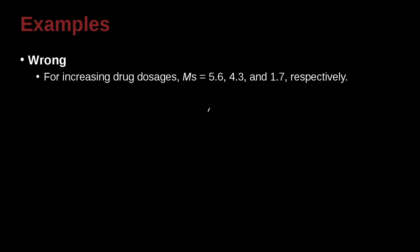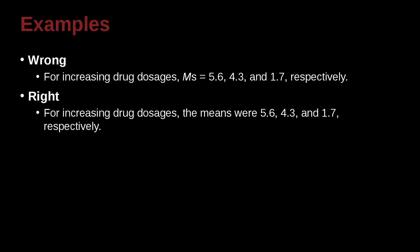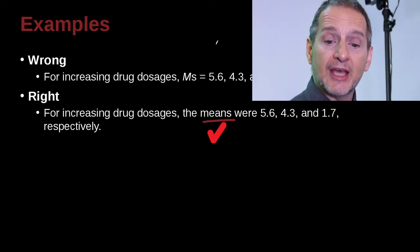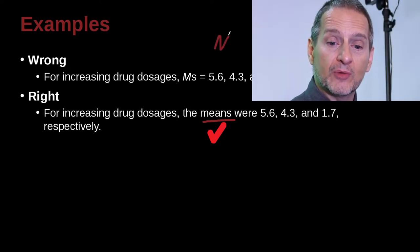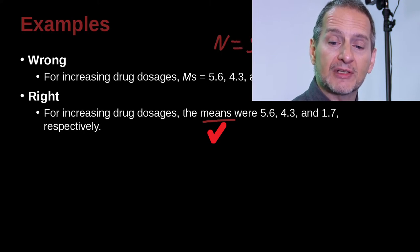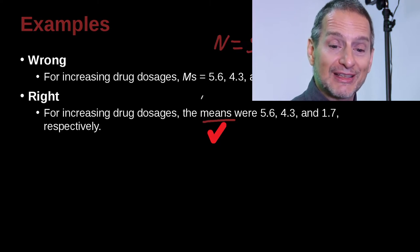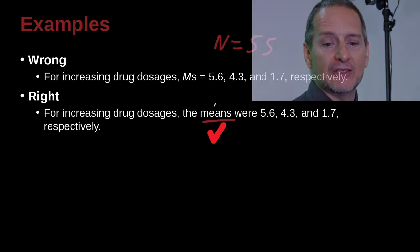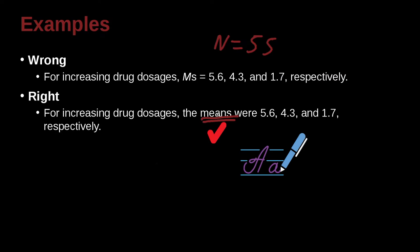For increasing drug dosage, the mean of 5.6, 4.3, and 1.7 respectively. And the correct way to write this would be to write out the word means, because we're only going to be using the M when we actually have it related to a formula. So N equals something, 55, something like this, right? But if you're actually not using it that way, you're writing, then in that case you go ahead and just write out the English word, the means were, or the mean is, something like that.